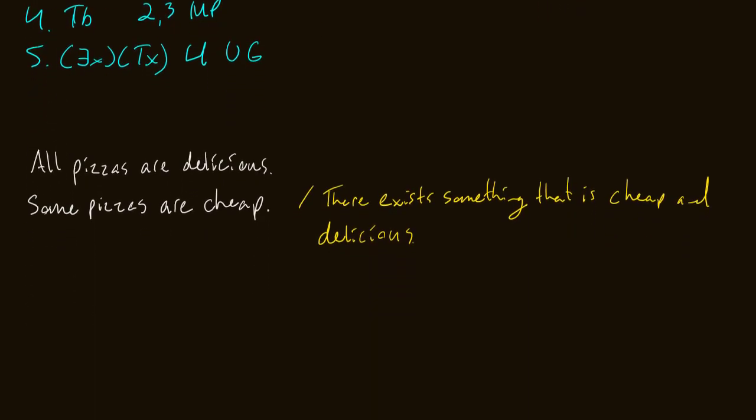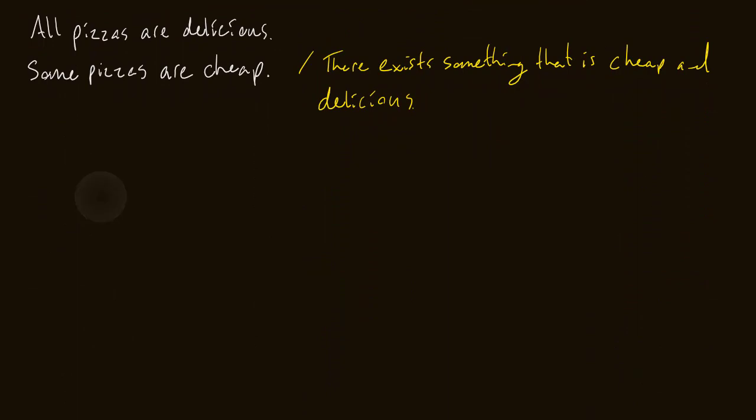Now let's get into our example of existential instantiation. It's not that difficult of a concept — it's just like universal instantiation, except when we existentially instantiate, it's always to a constant. An existential statement says that there exists something, so it's not true for everything. It might be one thing, it might be a few things. When we existentially instantiate, we have to name that something — we have to give an example — and we do that with a constant, not a variable.